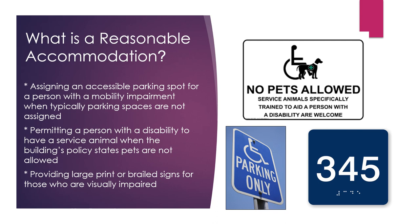What is a reasonable accommodation? Under the Fair Housing Act, a reasonable accommodation is a change, exception or adjustment to a rule, policy, practice or service that may be necessary for a person with a disability to have an equal opportunity to use and enjoy a dwelling unit. Examples include an assigned accessible parking spot for a person with a mobility impairment when parking spaces are not typically assigned, or permitting a person with a disability to have a service animal in their apartment when the building's policy is that pets are not allowed.